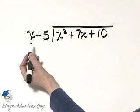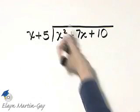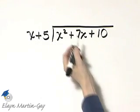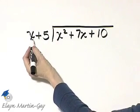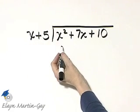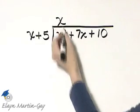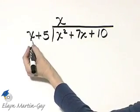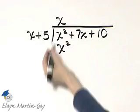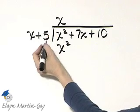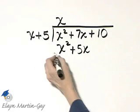You can say to yourself, x divides into x squared how many times? Or you can say, what times x gives you x squared? That would be x. x times x gives x squared, just like we want, and then x times 5, that's plus 5x.